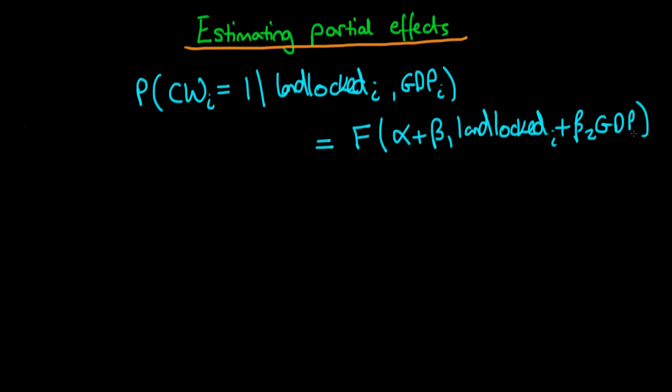And I should put i's here because I've put an i on the left-hand side. So let's say we're interested in evaluating the partial effect of GDP. How do we go about doing that?